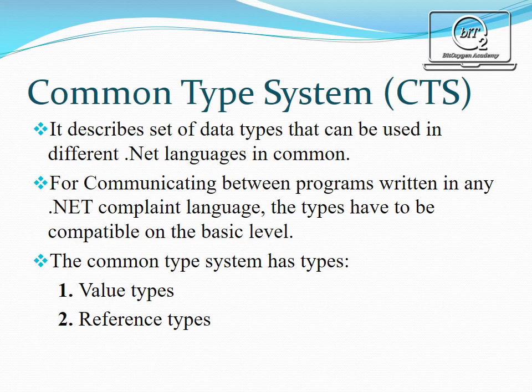The next component is Common Type System. It describes the set of data types that can be used across different .NET languages in common. The CTS is the core part of Common Language Runtime that takes care of cross-language integration. .NET Framework is language independent and supports over 20 different programming languages. For example, an integer variable in C# is written as int.